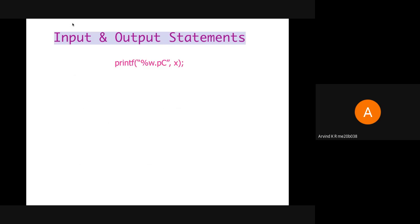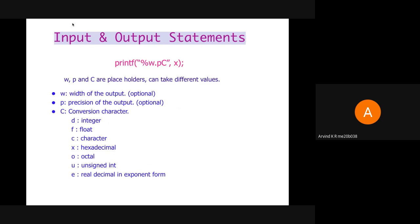Here you can see the general format for the format string. W, P and C are only placeholders and can take different values. In place of W, we mention the width required. In place of P, we mention the precision. And C is the conversion character. In place of C, we mention different characters based on the type of variable we want to print. For example, we use small d for integers, small f for float, small c for character and so on.